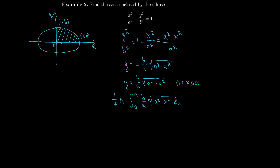This integrand has a square root we can't immediately eliminate, so we use trig substitution. We think of it as 1 minus sine squared, and substitute x equals a sine theta. Since x starts at 0, theta starts at 0, and we go from 0 to π/2. Then dx equals a cosine theta dθ. Since this is a definite integral, we need to find the new theta limits.